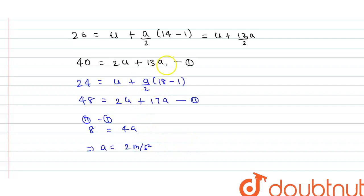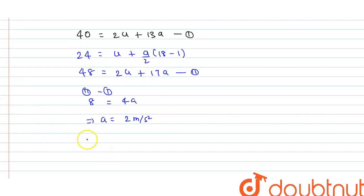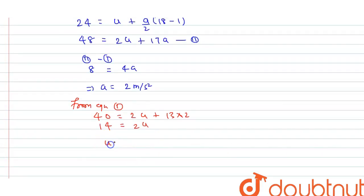Now put this value in any of these equations and we will get u. So from equation 1, 40 is equals to 2u plus 13 into a is 2. 40 minus 26, 14 is equals to 2u. Therefore, u is equals to 7 meter per second.